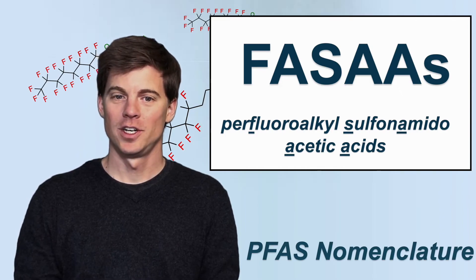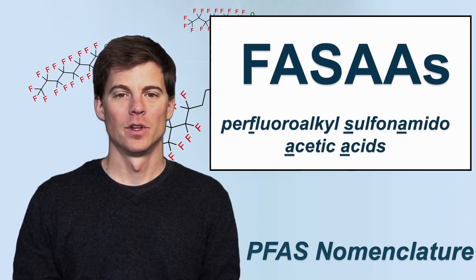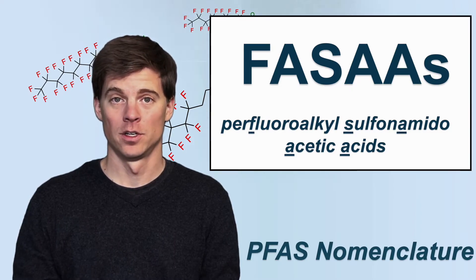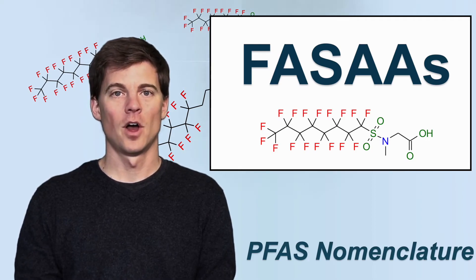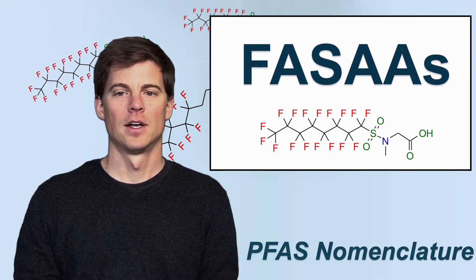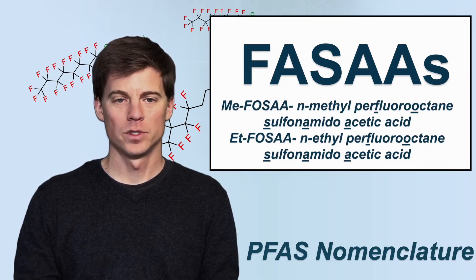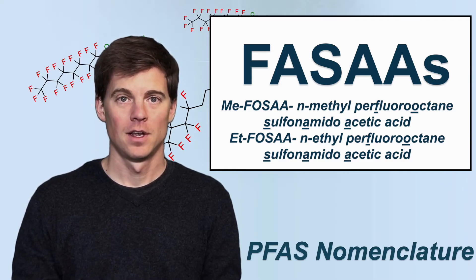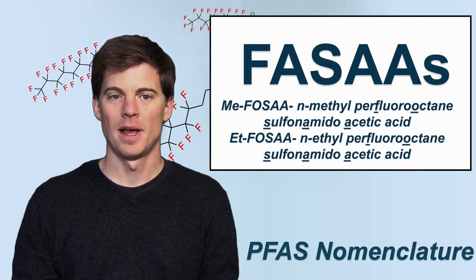Now for a more complicated structure: perfluoroalkylsulfonamidoacetic acids. This name tells us there's a sulfonamide group and an acetic acid group — extra functional groups added to give characteristics like improved water solubility. The structure has eight fluorocarbons, an SO2N sulfonamide group, an acetic acid portion, and a methyl group. This compound is called MeFOSAA — N-methyl perfluorooctane sulfonamidoacetic acid. It is included in EPA Method 537, though it has not been detected frequently despite being widely looked for.